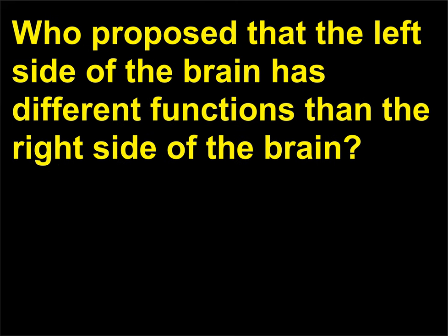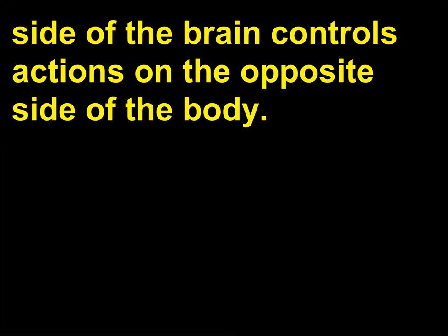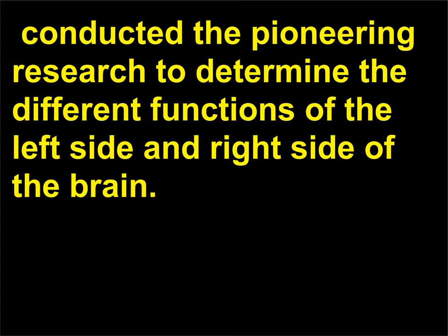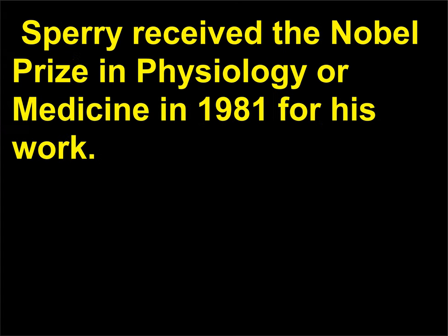Who proposed that the left side of the brain has different functions than the right side of the brain? Scientists have been aware for at least 100 years that each side of the brain controls actions on the opposite side of the body. However, it was not until the 1950s that Roger Sperry (1913–1994) conducted the pioneering research to determine the different functions of the left side and right side of the brain. His experiments contributed to the split-brain theory. Sperry received the Nobel Prize in Physiology or Medicine in 1981 for his work.